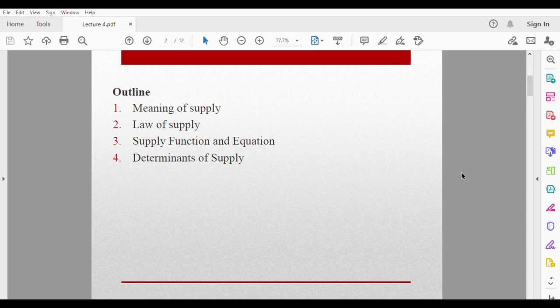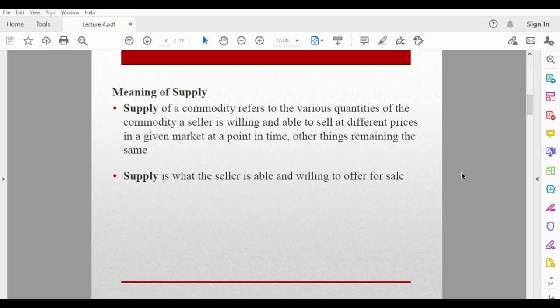Let's look at the meaning of supply. Supply of a commodity refers to the various quantities of the commodity a seller is willing and able to sell at different prices in a given market at a point in time, other things remaining the same or ceteris paribus. So supply is what the seller is willing and able to offer for sale. If a seller is willing to offer something for sale but is not able, it's not considered as supply. And if he is able but not willing, it's also not considered as supply.